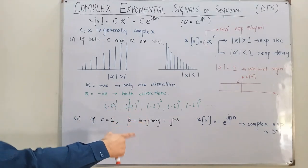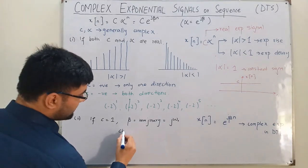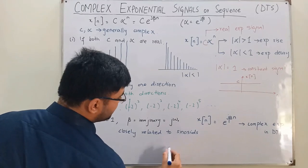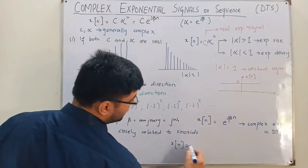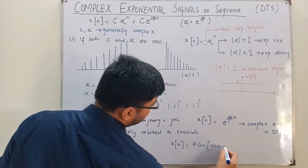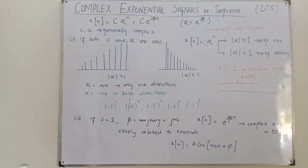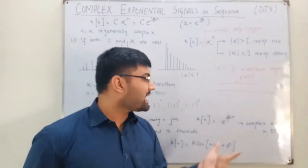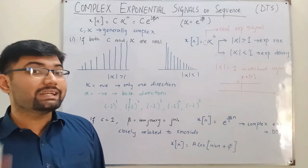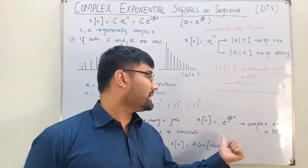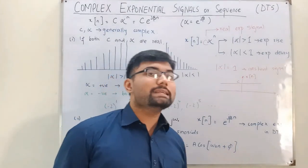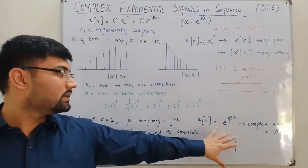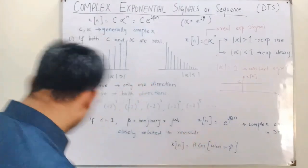This complex exponential signal is closely related to sinusoidal signals, written as x of n equals A times cosine of omega-naught times n plus phi. In the continuous time domain the complex exponential is periodic for every value of omega-naught. In the discrete time domain this is not always the case — the signal may or may not be periodic. We will cover the periodicity property in the next video.